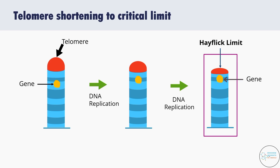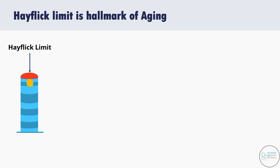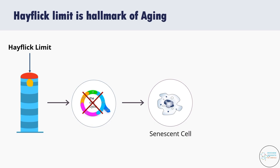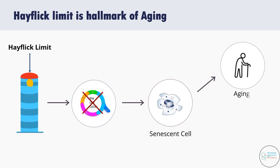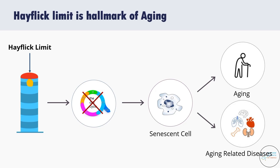When the telomeres get shortened to the Hayflick limit, the cells stop going into the cell cycle — they are no longer able to divide and are said to be senescent. Cell senescence is a condition in which a cell no longer has the ability to proliferate or divide. We are talking about somatic cells — the cells that make up all internal organs, skin, bones, blood, and other connective tissues. Once somatic cells become senescent, the tissue becomes depleted of functional cells, which leads to aging and age-related diseases.